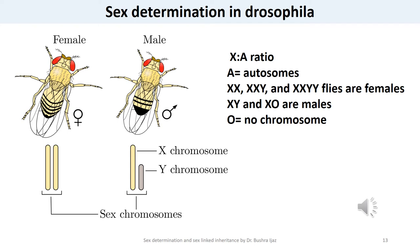Dosage compensation refers to the process by which animals equalize the amount of gene product generated from X-linked genes in males and females. Unlike in mammals, all of Drosophila's X chromosomes remain active, and flies adjust X-linked gene product levels by doubling expression from the X chromosome in males. An extra copy of the X chromosome, which contains close to one-third of the fly's genes, creates an aneuploidy and greatly disturbs cellular equilibrium.